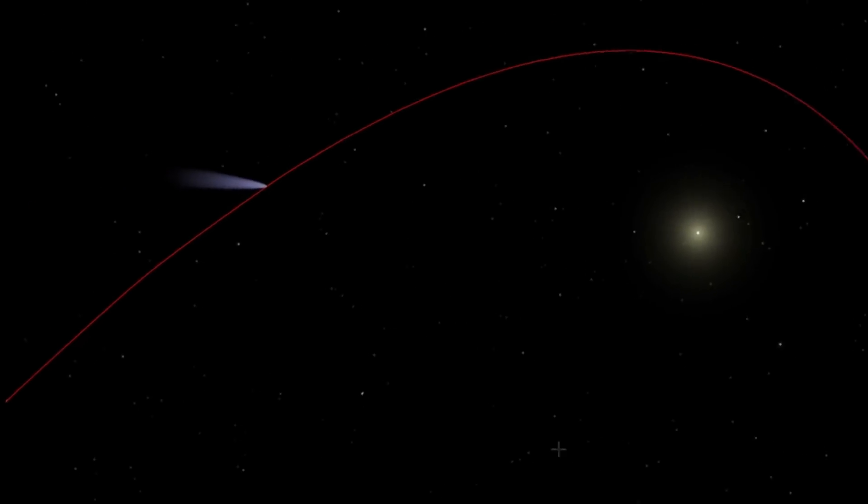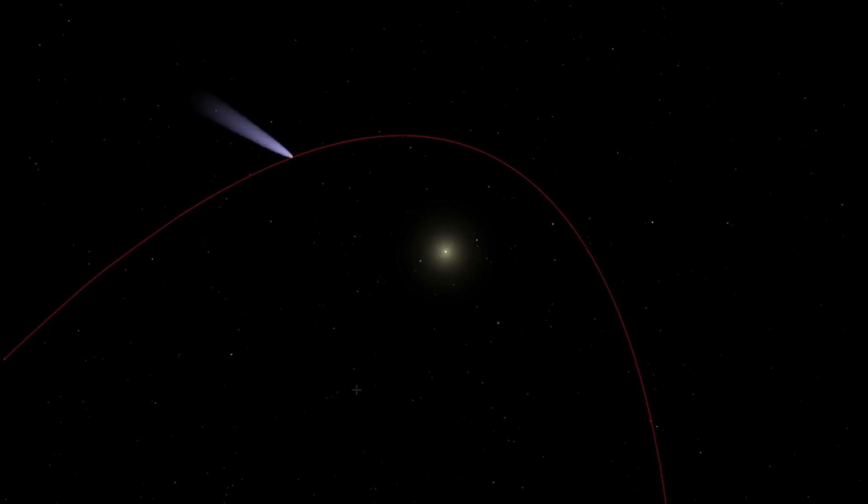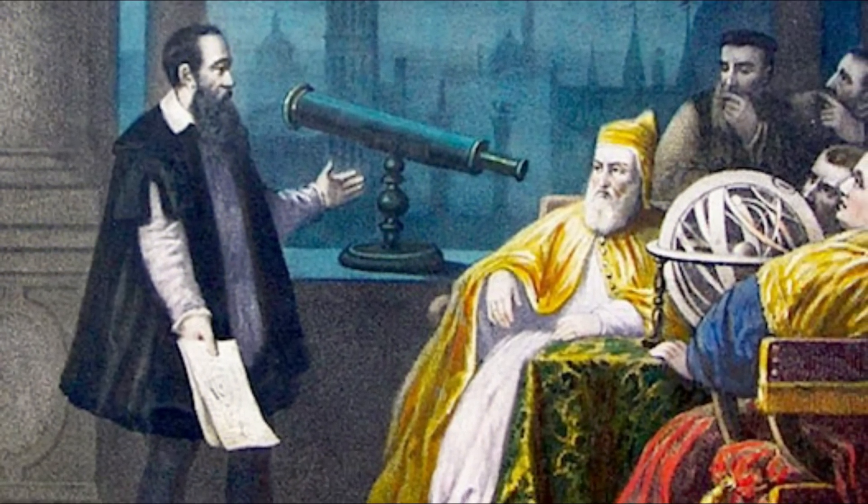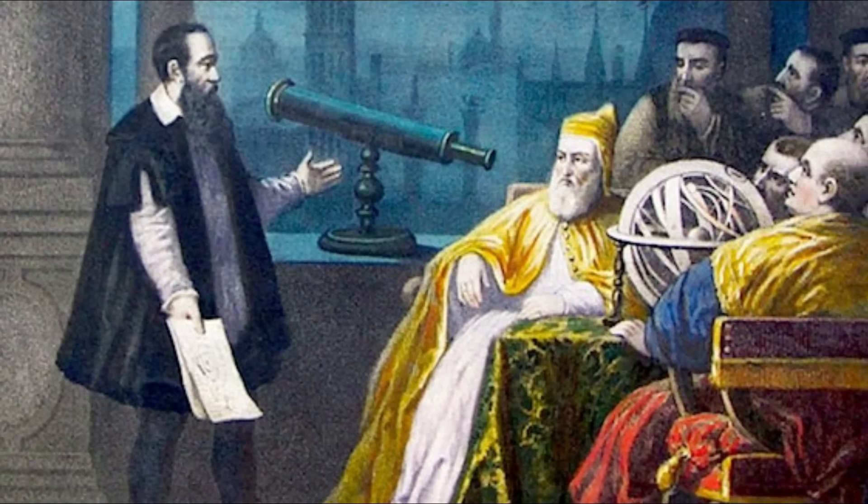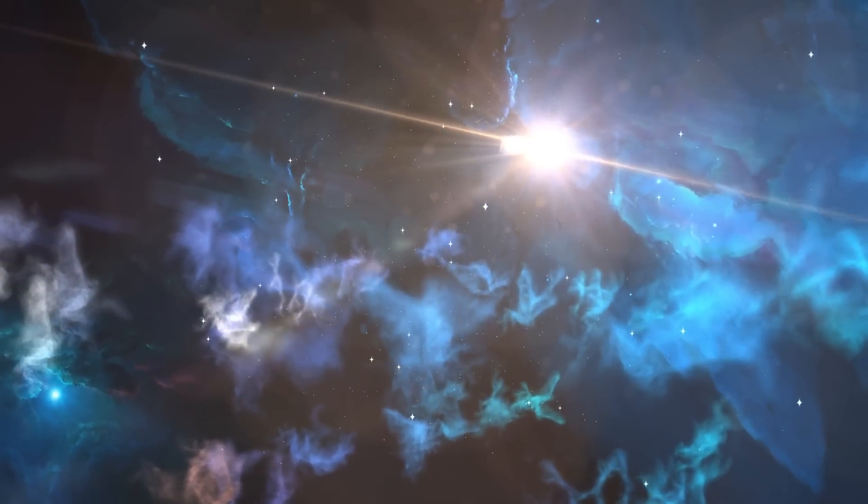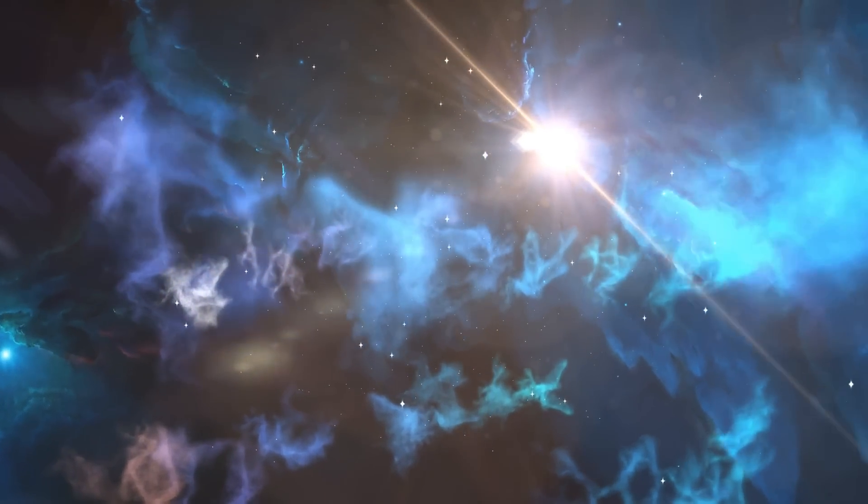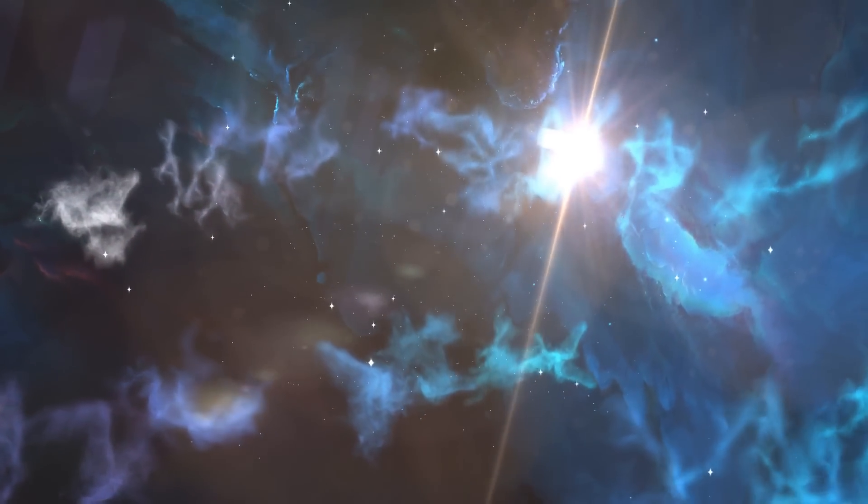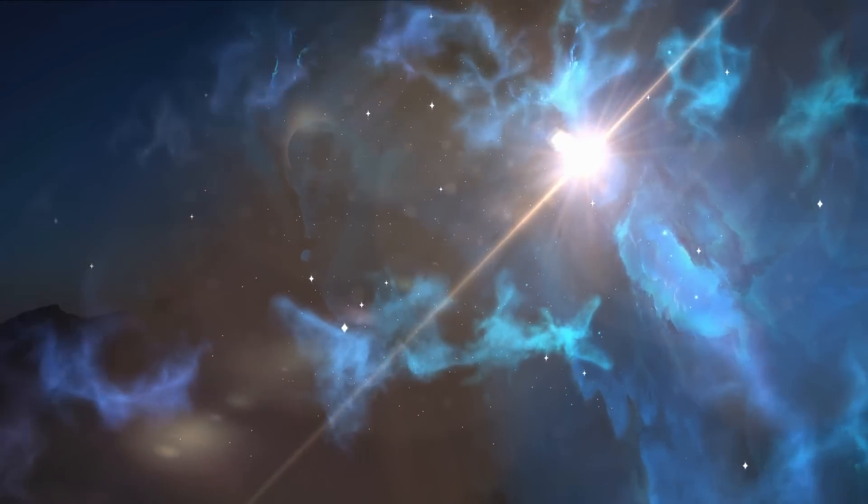But then 13 years later, on February 5th, 1609, the star came back. And Fabricius was there to see it once again. And he wasn't the only one to notice, because a few years prior, Jonathan Bayer had noticed the star in the sky and put it in his famous Star Atlas. But because he wasn't with Fabricius in the decade prior, he didn't understand the importance of the star or what it could mean for astronomy as a whole.